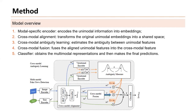In this paper, we propose CAFE to tackle the problem of multimodal fake news detection via cross-modal ambiguity learning. As shown in this figure, CAFE consists of five parts: a modality-specific encoder, cross-modal alignment, cross-modal ambiguity learning, cross-modal fusion, and a classifier.